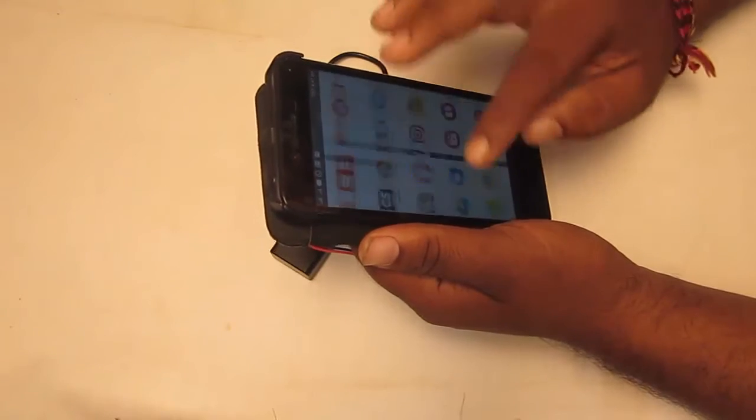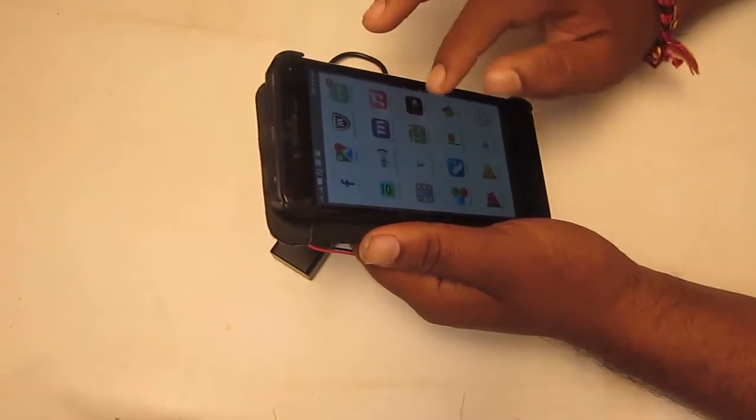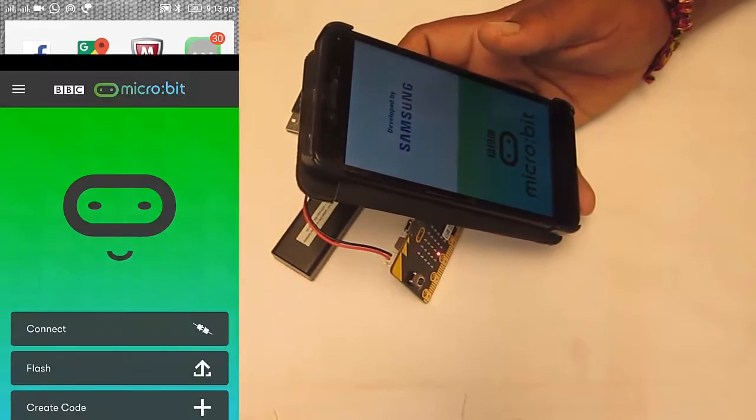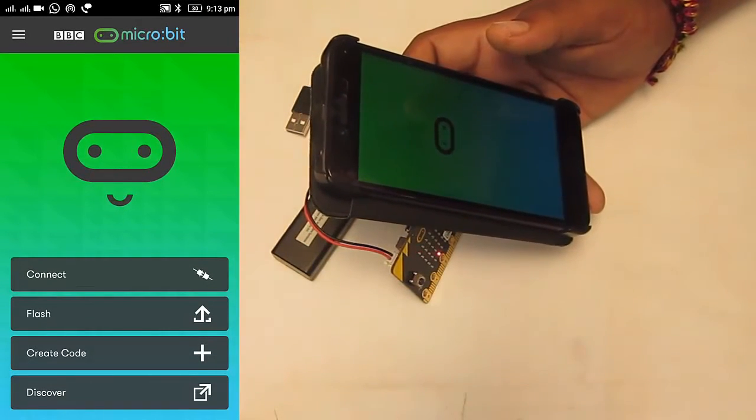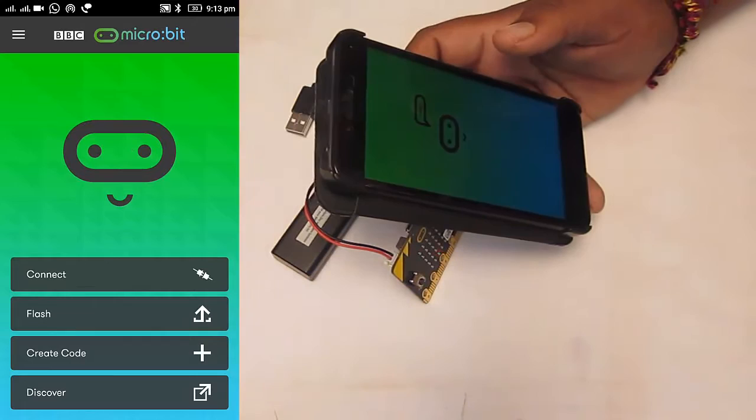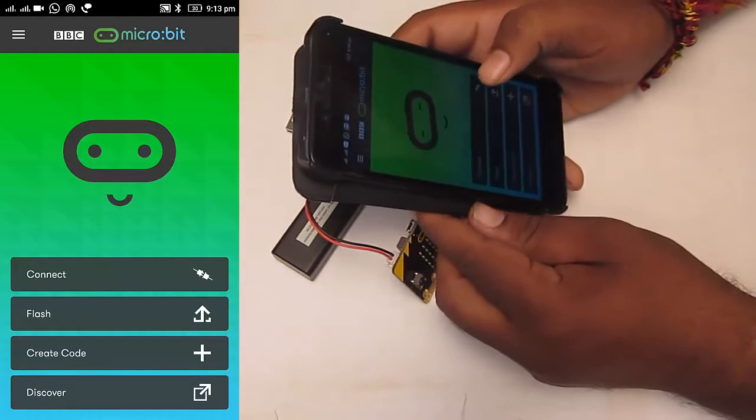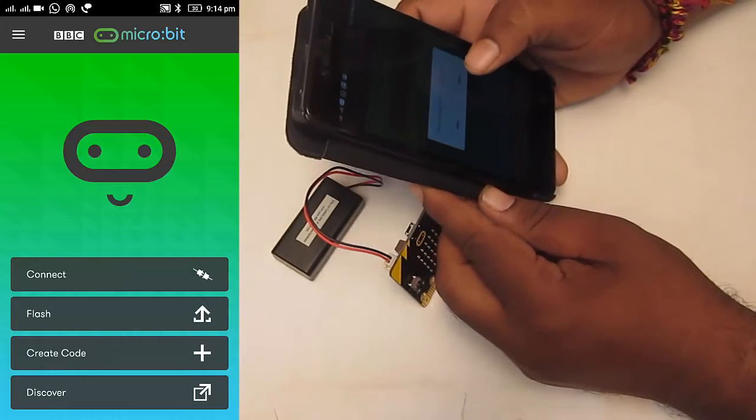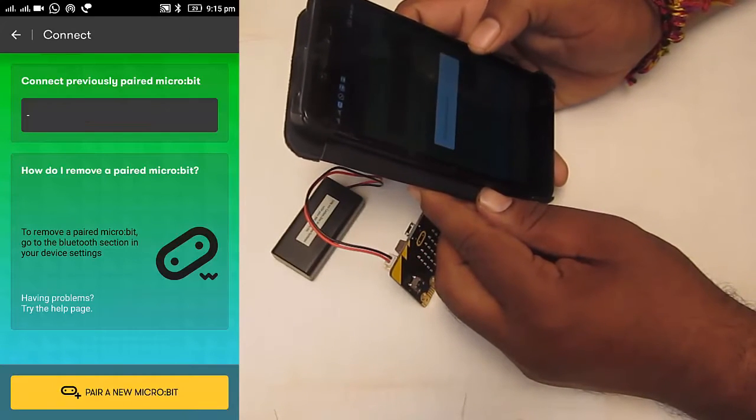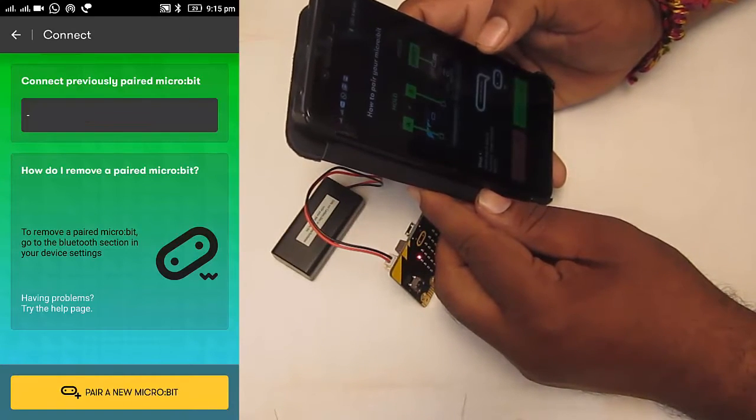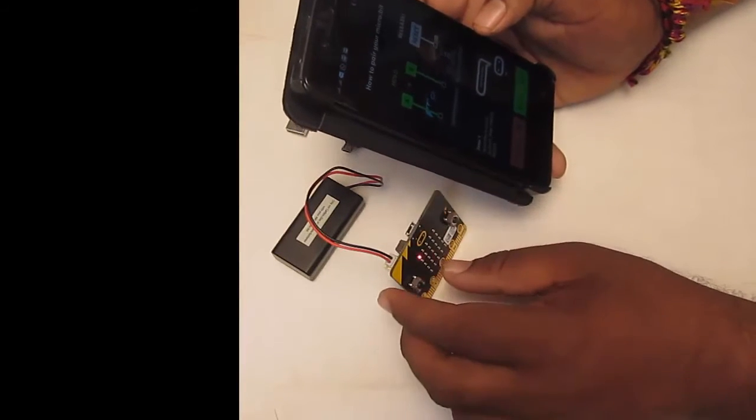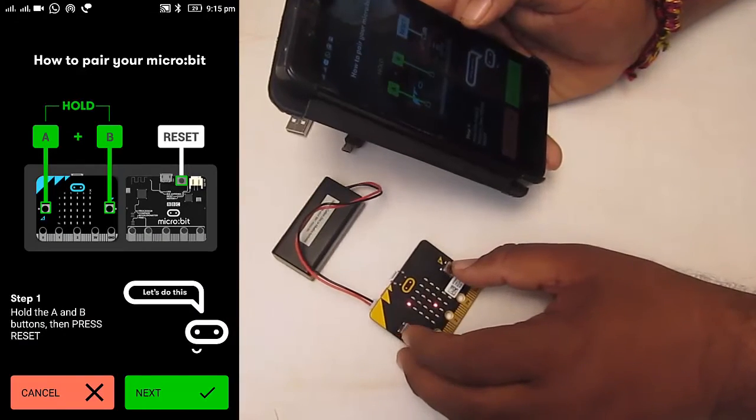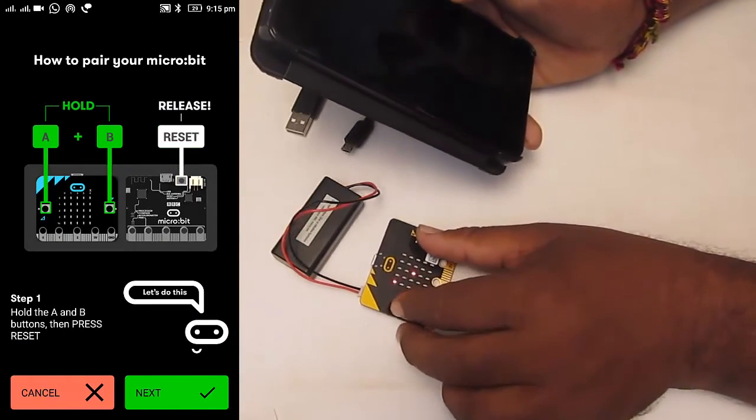Here on 'Connect,' I can click on 'Pair new micro:bit.' It's asking me to hold the A and B buttons on the micro:bit module.